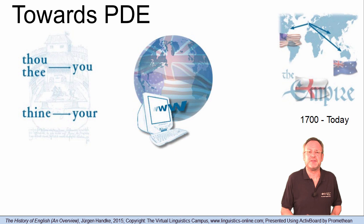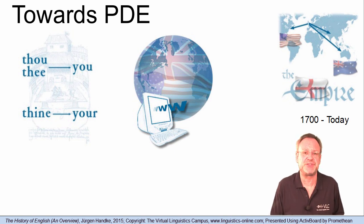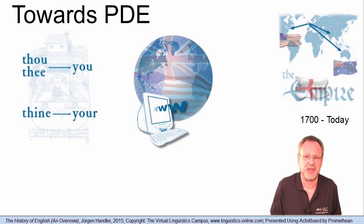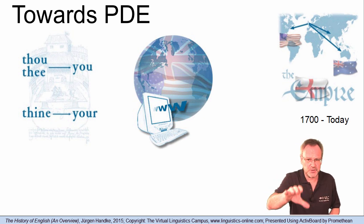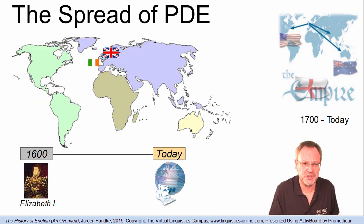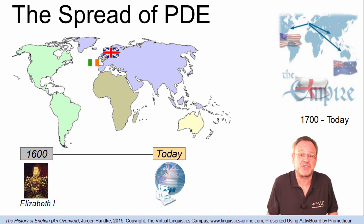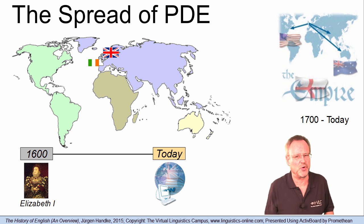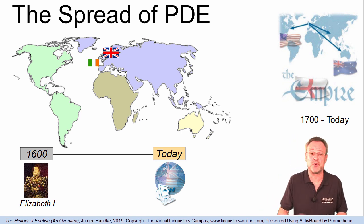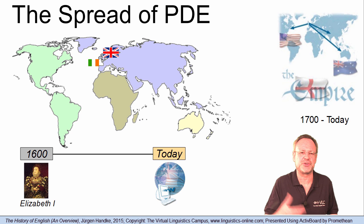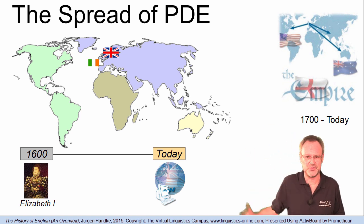By about 1700, the English language differed only slightly from present-day English. The most important development was external — it concerned the position of the English language among the languages of the world. From a regional language, it developed to the most widely used language of our time. The first significant step in the progress of English towards its status as a global language did not take place before the end of the 16th century. By the end of the reign of Elizabeth I in 1603, literature had boomed through the works of Spenser, Marlowe and Shakespeare, and Francis Drake and Walter Raleigh had laid the foundation for expanding the English influences in the new world.